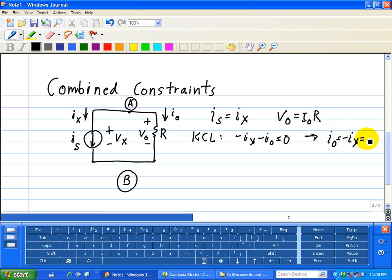This is equal to minus IS in terms of our driving source. So we can think of IS as our input, and VO or IO as our output variables.